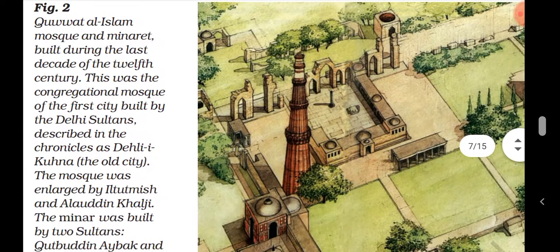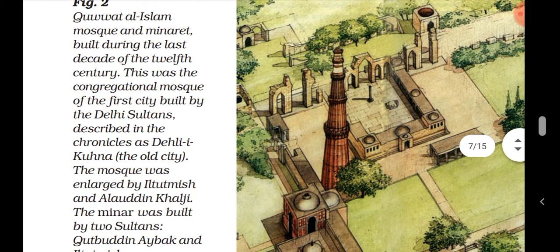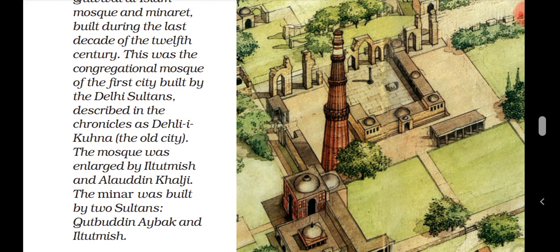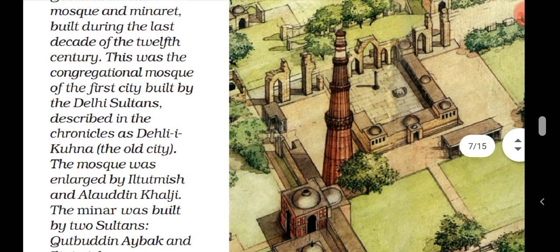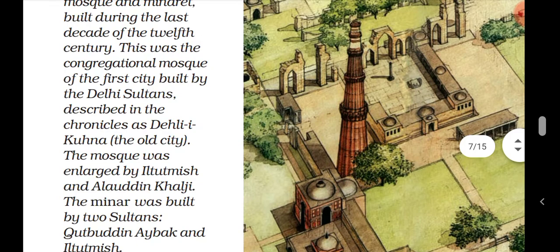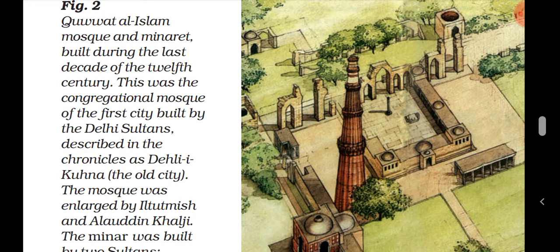Here in this picture you can see the Quwwat-ul-Islam mosque and the Qutb Minar. During the last decade of the 12th century, this was the congregational mosque of the first city built by the Delhi Sultans, described in the chronicles as Delhi Kunha, the old city. The mosque was enlarged by Iltutmish and then by Alauddin Khilji. The Qutb Minar was built by two sultans — Qutubuddin Aibak and Iltutmish.